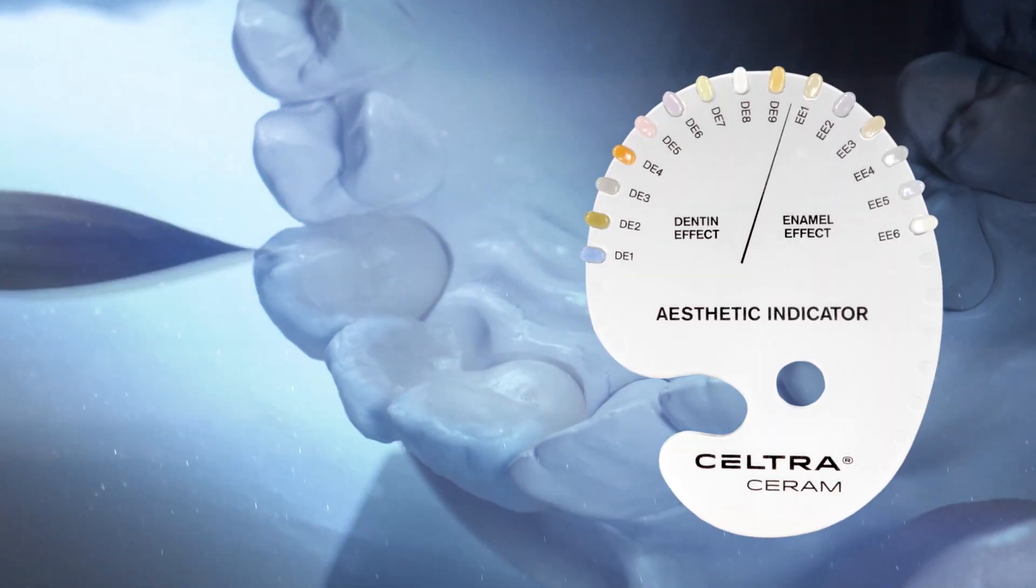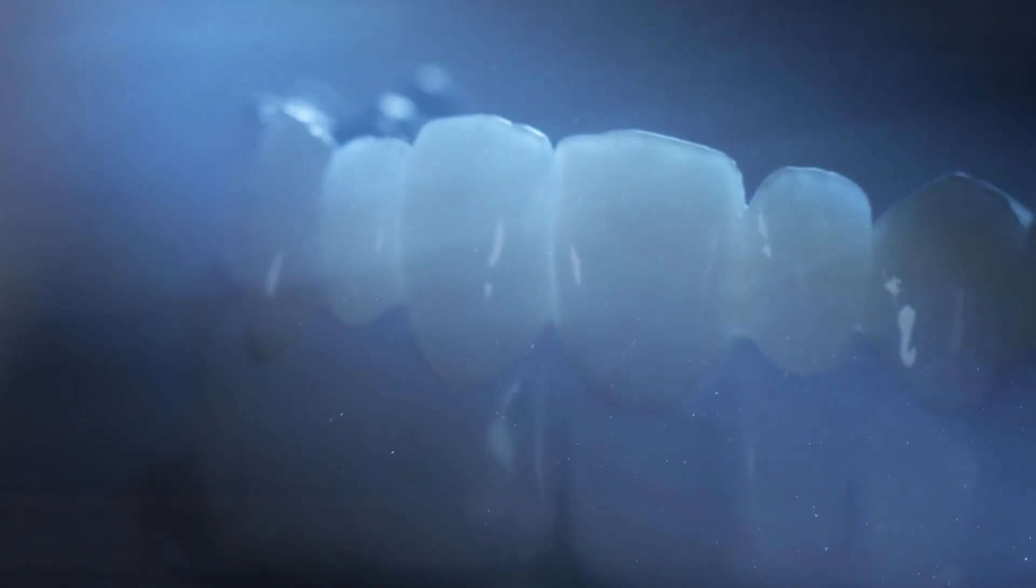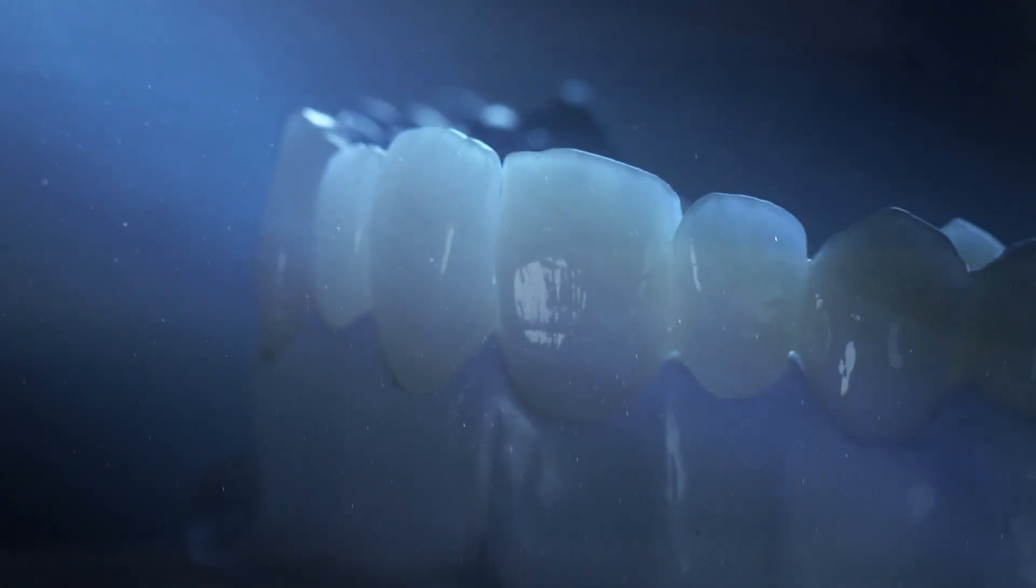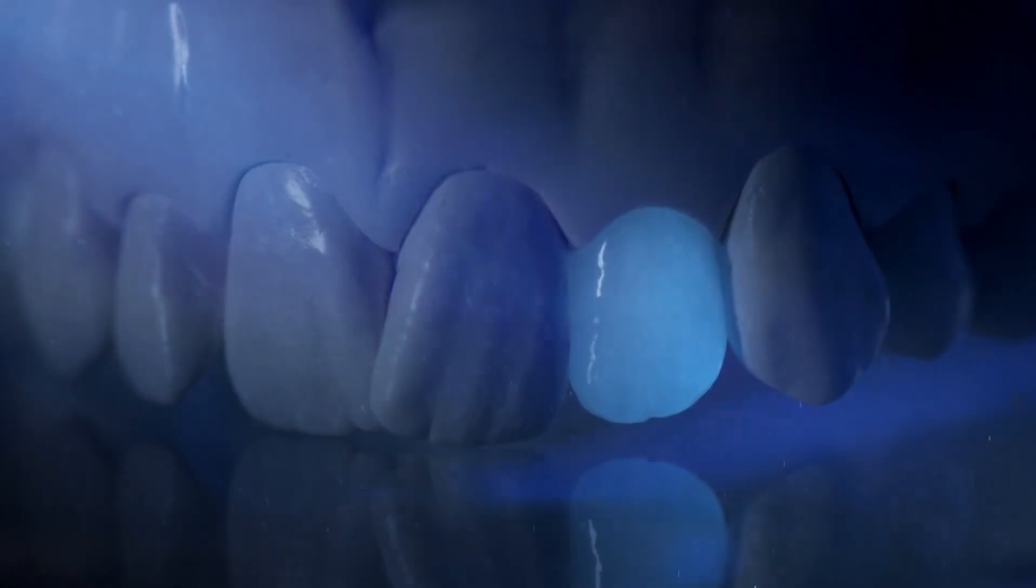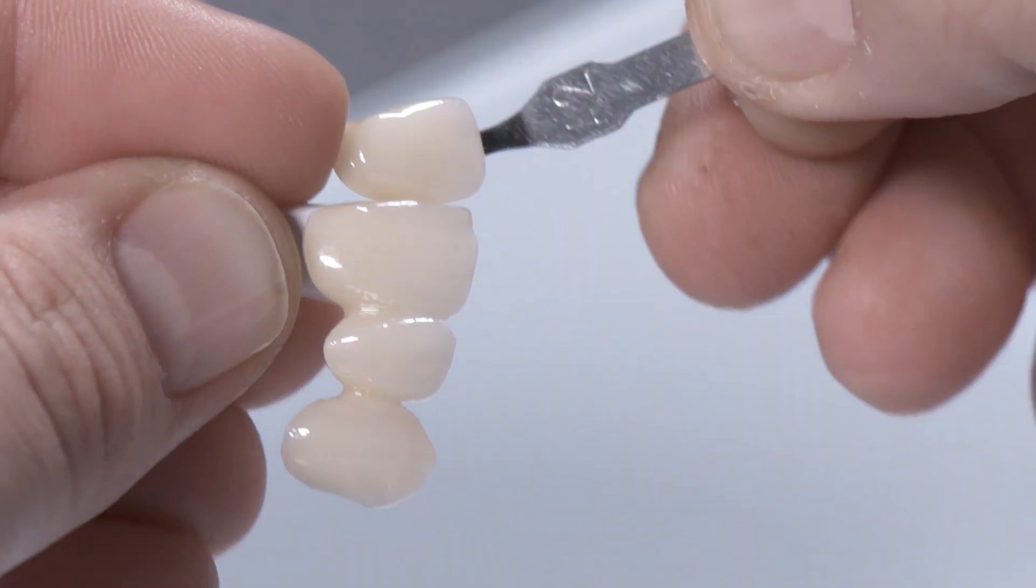The Seltra Ceram veneering ceramic combines Seltra Press and Circon with its different translucency variants into a comprehensive all-ceramic treatment and performance concept. Depending on the desired indication or design, it lets laboratories and dentists provide flexible, safe and fast all-ceramic restorations of the highest quality and with high shade fidelity. The Seltra Ceram veneering